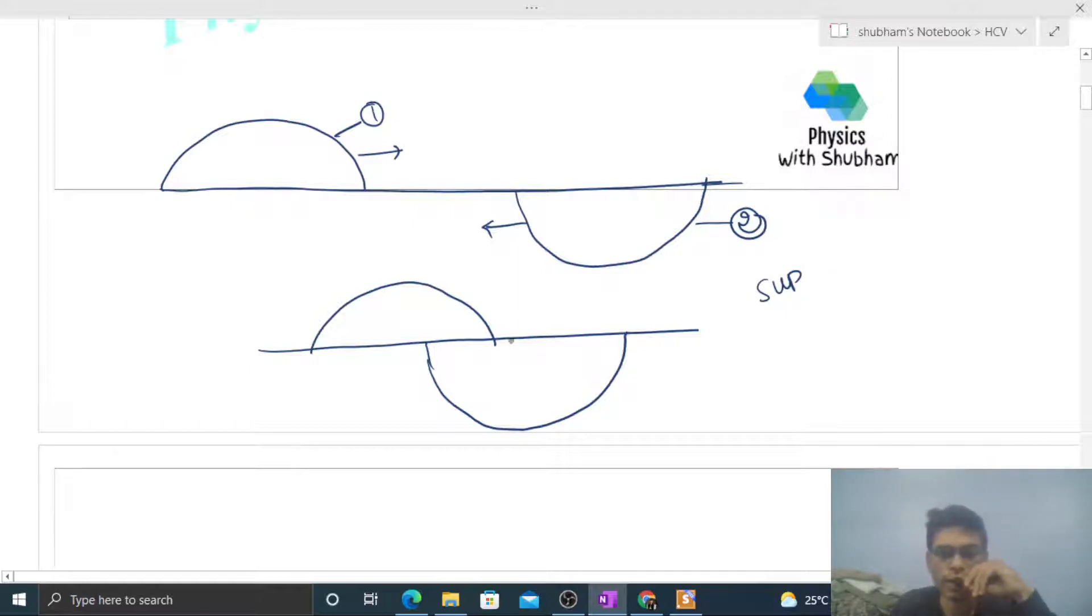So us time pe kya hota hai? Superposition principle of the displacement of waves kya kehta hai ki aap dekho, yeh wala jo part hai jahan pe yeh jo do waves hai yeh overlap karti hai, is part mein jo particle ka net displacement hoga, let's say y_net, that will be y1 plus y2.